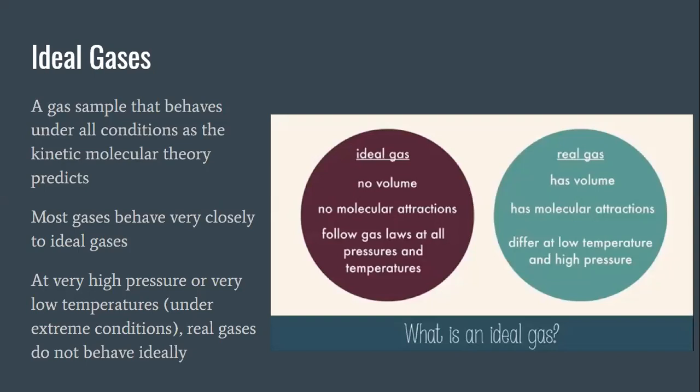Ideal gases behave as the kinetic molecular theory predicts. So it's said that a gas sample that behaves under all conditions as the kinetic molecular theory predicts is considered an ideal gas. Most gases behave very closely to an ideal gas. But in some cases real gases do not behave ideally and that's when they're under extreme conditions. Like at extremely high pressures or very low temperatures.